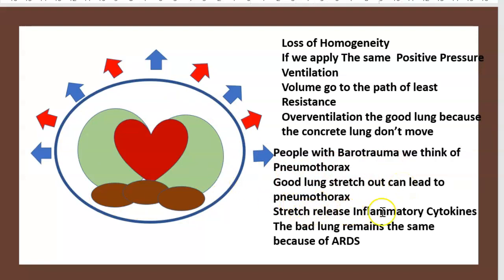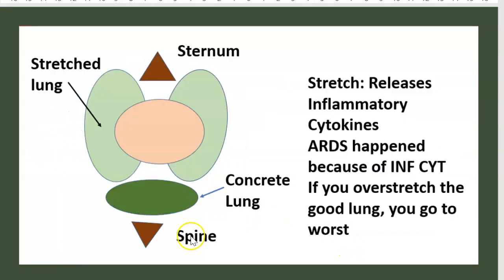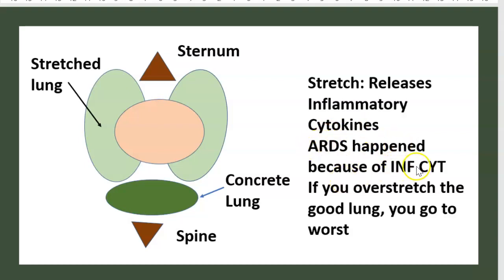The stretch releases inflammatory cytokines. The bad lung remains the same because of higher density. The stretch of the good lung releases inflammatory cytokines, and these inflammatory cytokines lead to higher death.